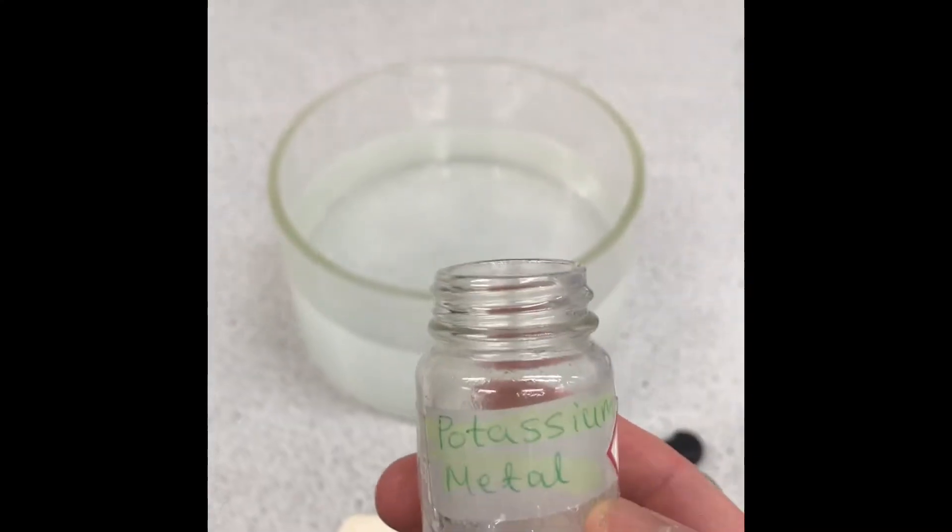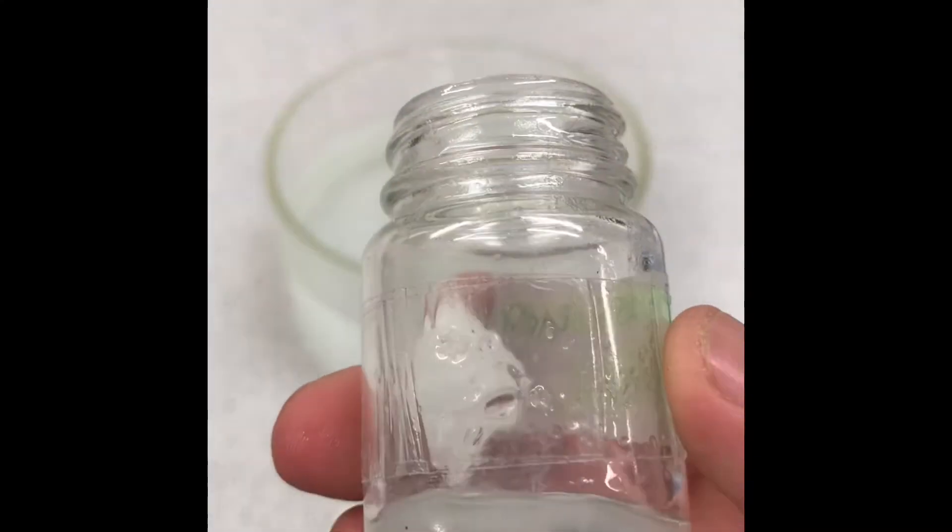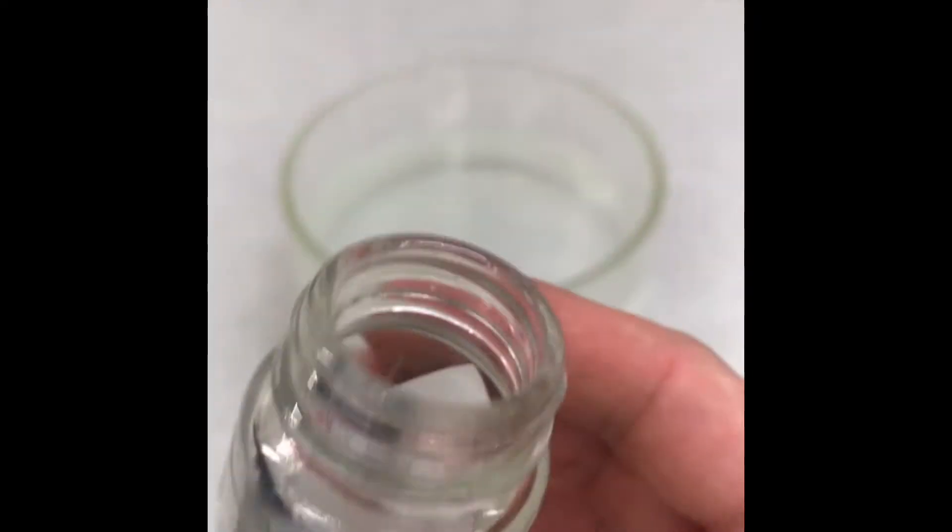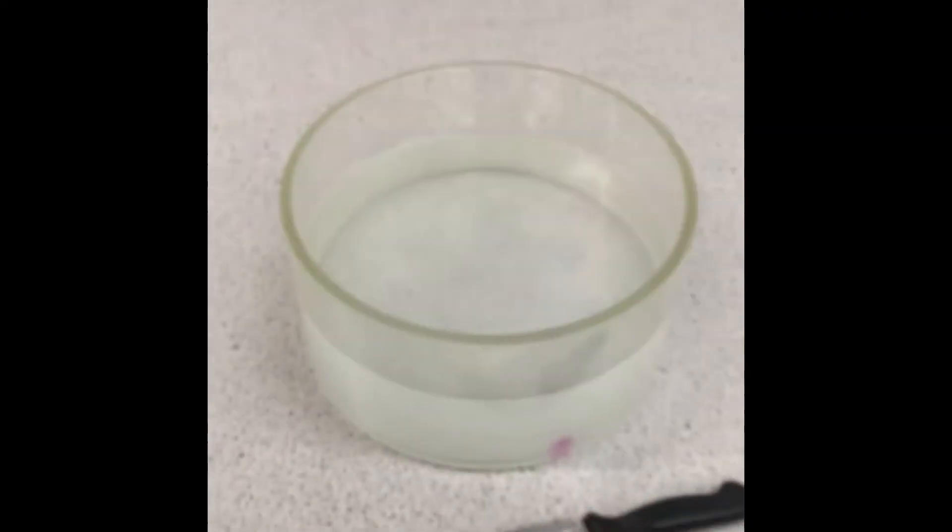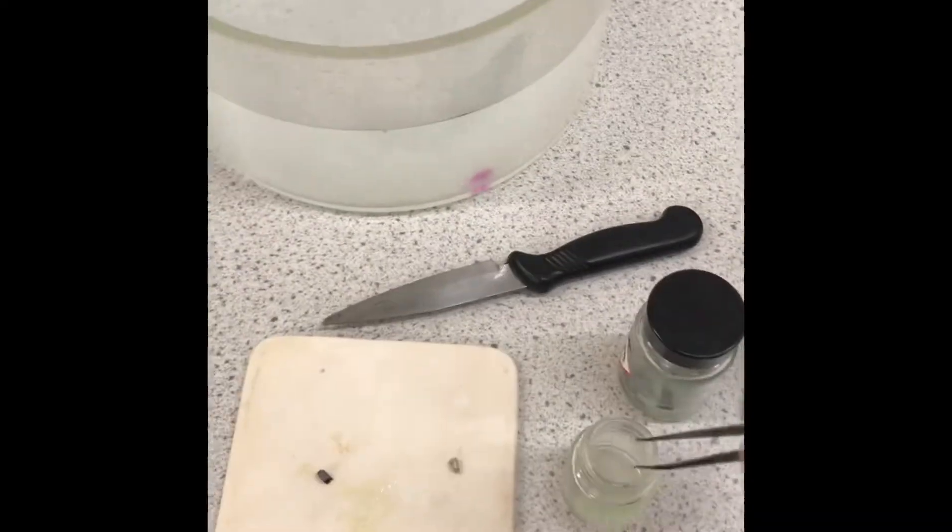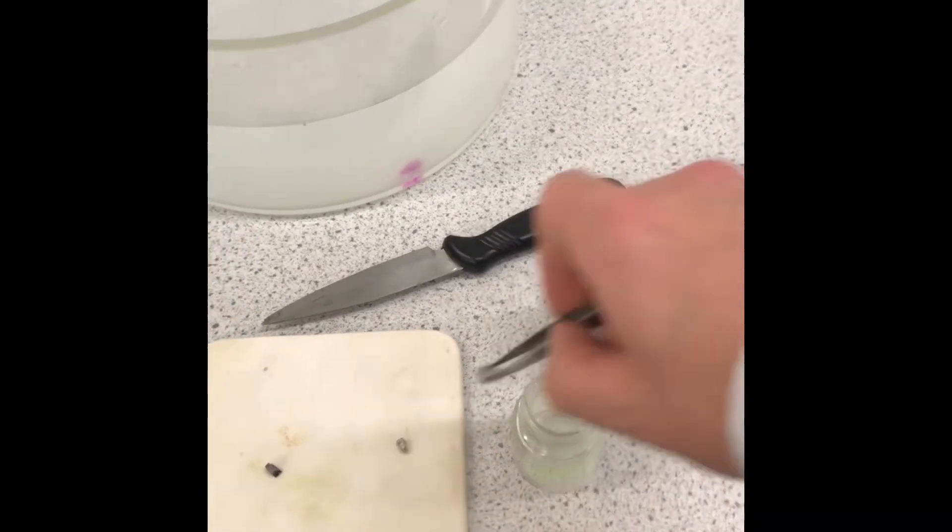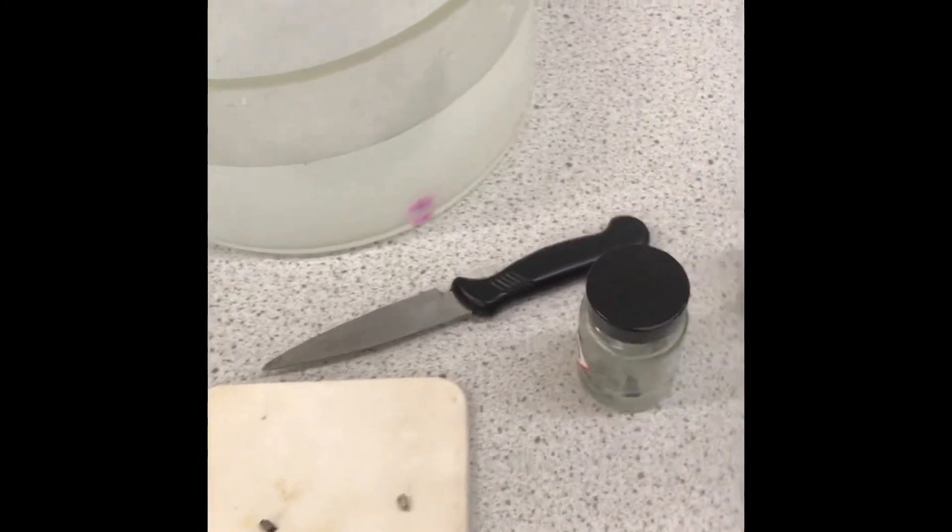Our next alkali metal is potassium. Like all other alkali metals, it is stored in oil so that it doesn't react with the oxygen from the air. I will use my forceps to take a piece of potassium out of its container.